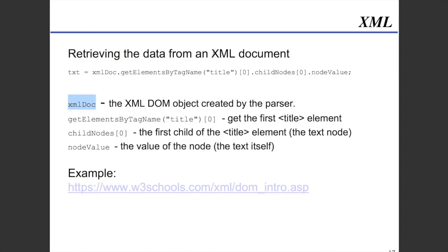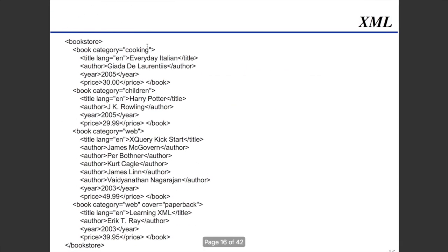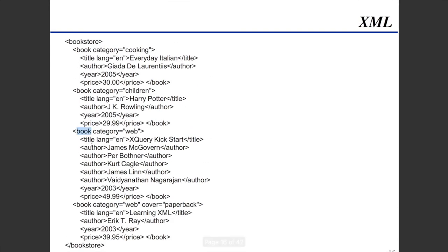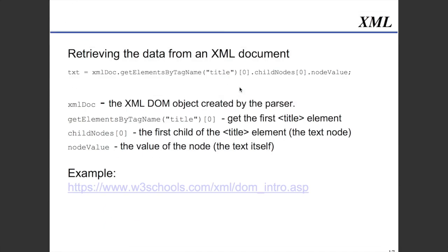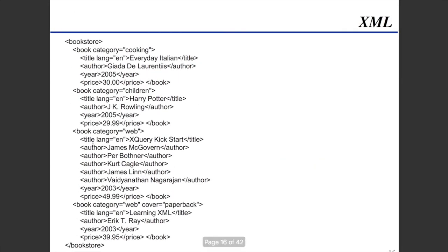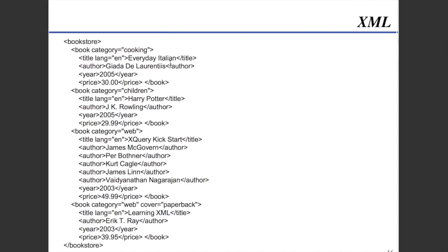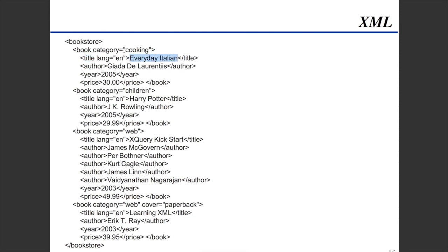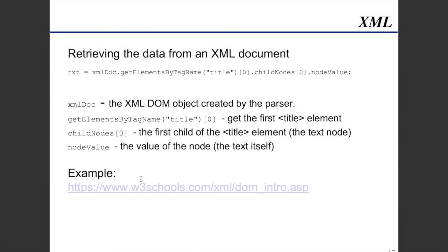Now we'll look at retrieving data from an XML document. You can actually run this in your HTML web page between some script tags. The XML doc is the object created by the parser, and basically it's going to say 'get elements by tag name.' The tag name is the leading text inside the tag itself. Here we say 'give me title,' and it's going to find the first title and return it — so 'Everyday Indian.' Then child nodes zero will be the text node, and node value returns that value back.